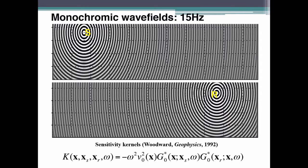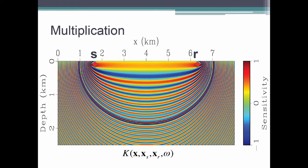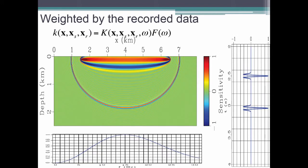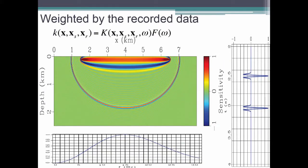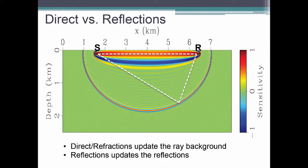Another way to look at all of this is with sensitivity kernels. Going back to Woodward's paper, the kernel is given by running two monochromatic wavefields - one from the source and one from the receiver - and multiplying them together. You get something like a banana kernel, which tells you a lot. Depending on the frequency you can convolve these with residuals and get your update. For a single source-receiver pair, if residuals correspond to a direct arrival or a reflected arrival, one updates along the ray path - updating the background - while the other does not update the background, which is the main issue with FWI.